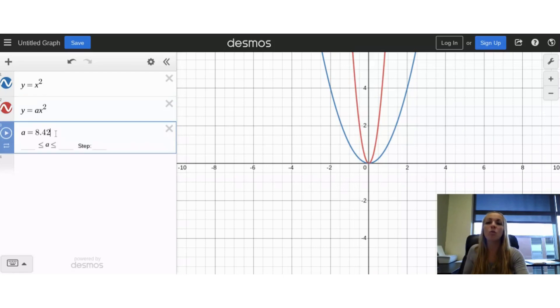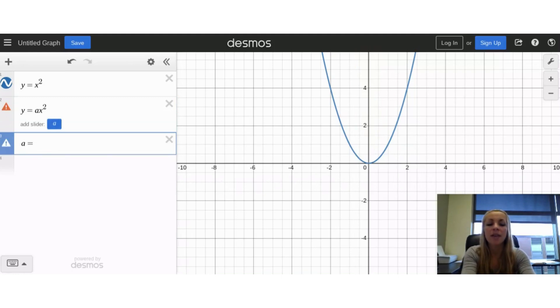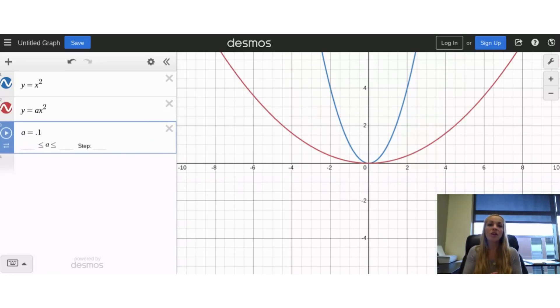Now let's explore when a is between 0 and 1. So let's do things like 0.5, or 0.3, or 0.1. You'll notice that there is a vertical compression of the graph. Think like you're stomping down on this thing.